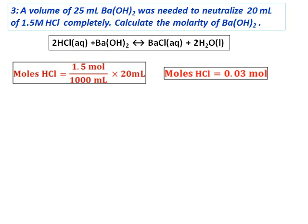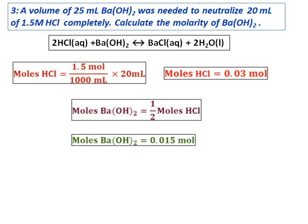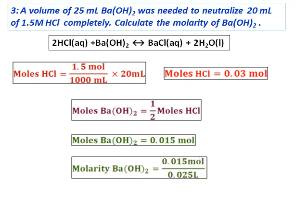From the equation, for every 2 moles of hydrochloric acid, I need 1 mole of barium hydroxide. Therefore, to calculate the moles of barium hydroxide from the calculated moles of hydrochloric acid, we know that moles of barium hydroxide equals half the moles of HCl. Therefore, the moles of barium hydroxide comes to 0.015 and the molarity calculated comes to 0.60 molar.